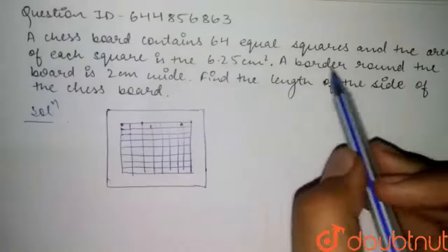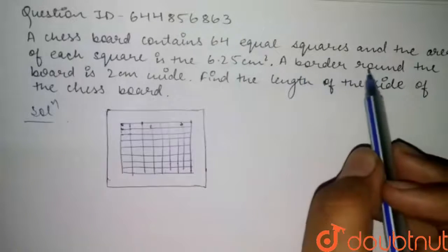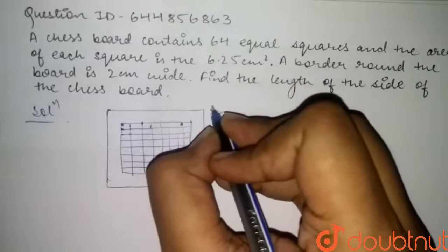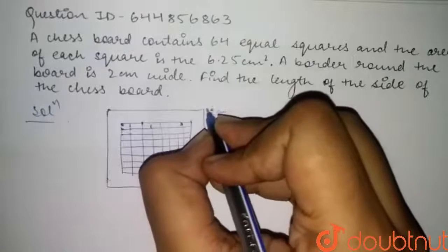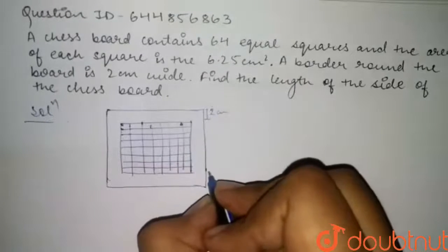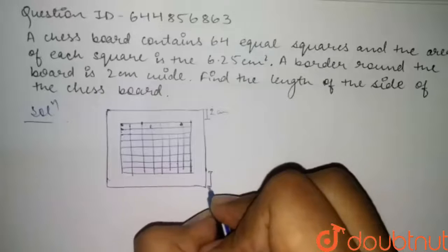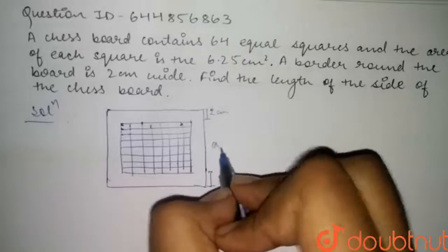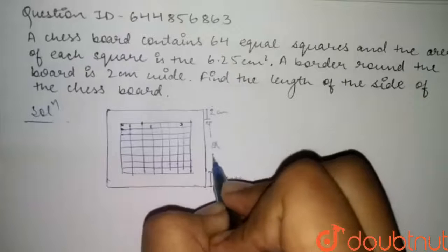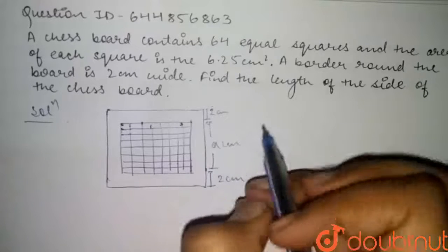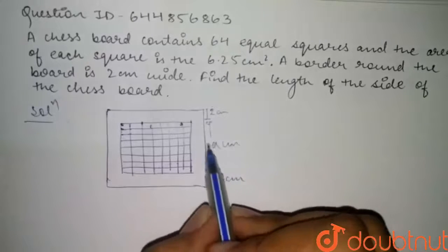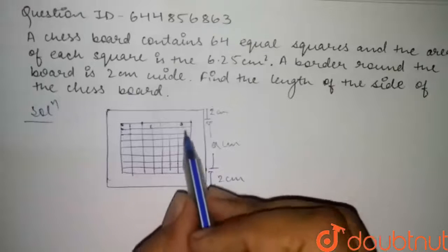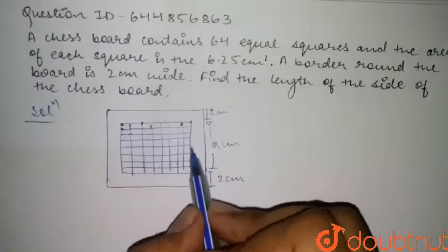It is given that the border around the board is 2 centimeters wide — 2 centimeters from here to here, and also 2 centimeters on the other side. Let's call the length of the inner chess board as 'a' centimeters. Since it's a square, 'a' represents all sides.